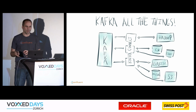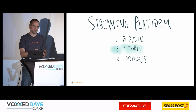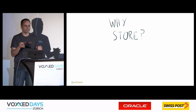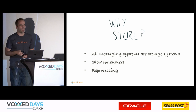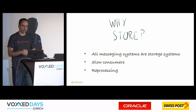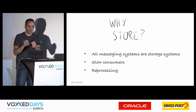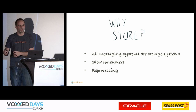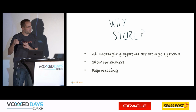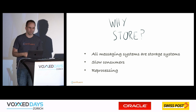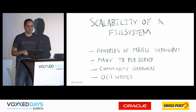Beyond messaging, storage is also a key part of Kafka. Every messaging system is ultimately a storage system because consumers may be down or unable to keep up. Kafka handles this smartly — supporting slow consumers, reprocessing (like building different ML models), or a new microservice version that needs to start from the beginning and consume all historical data from offset zero.